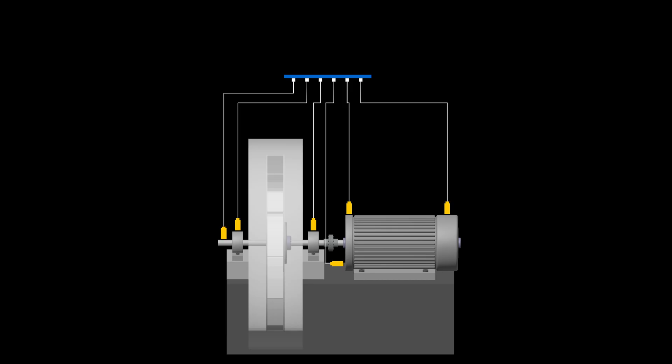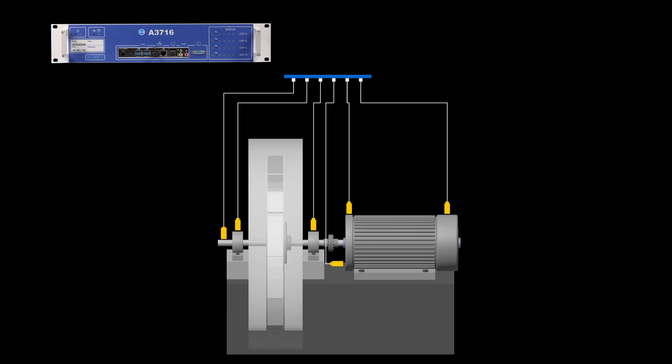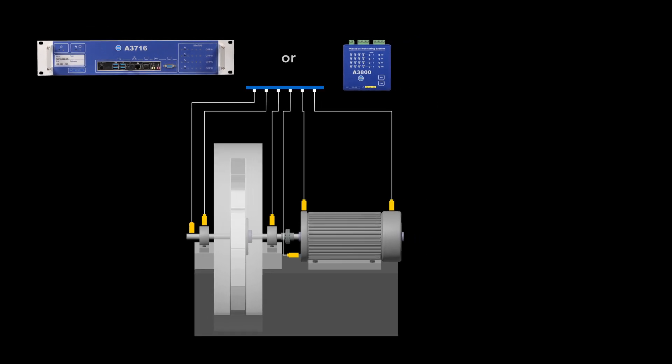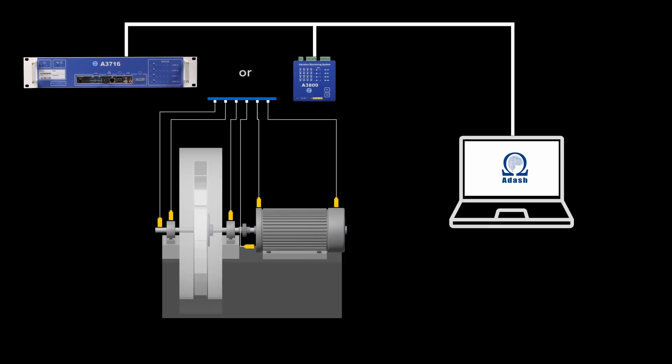All sensors are connected to the Adash online unit. Both types A3716 and A3800 can be used. The online unit is connected to the computer with Omega software.